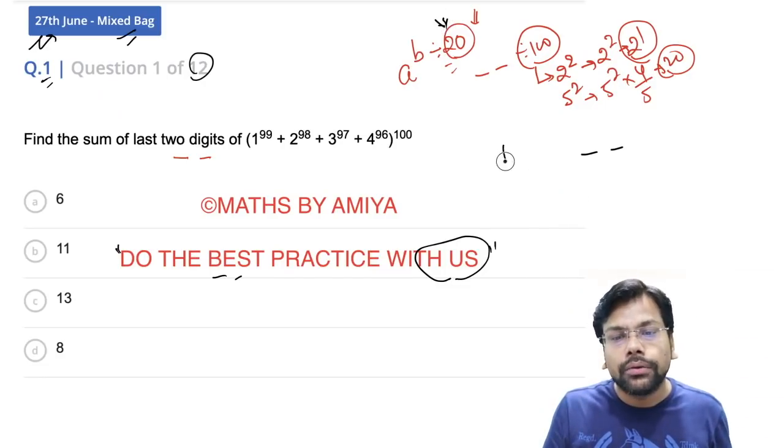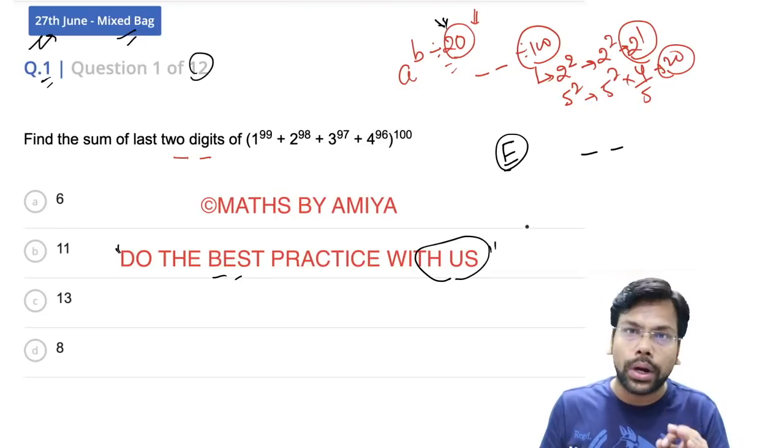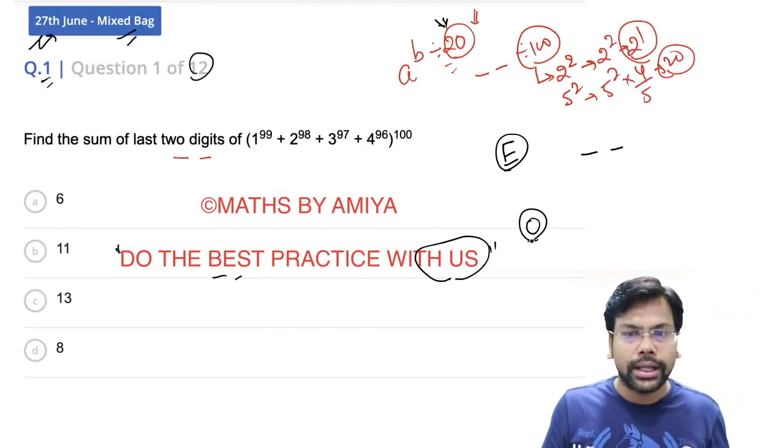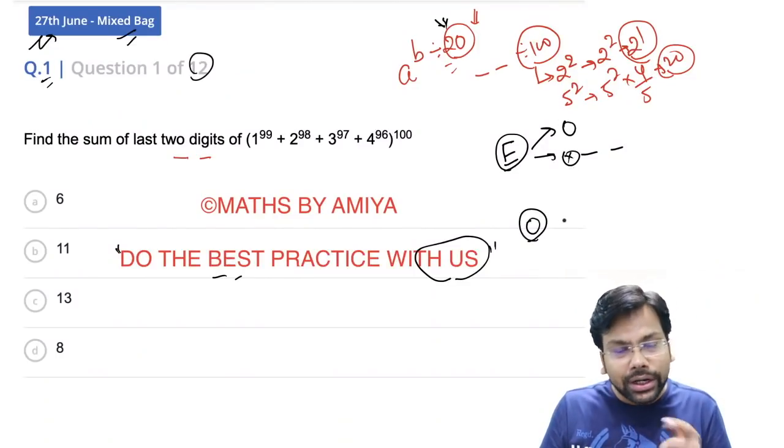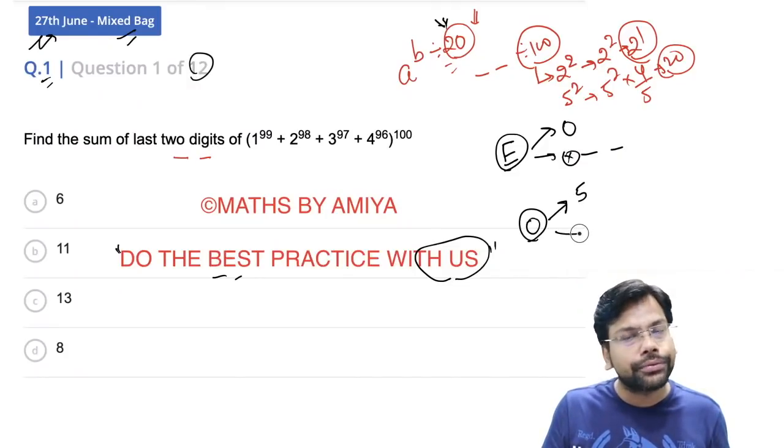Last two digits of any number would be repeated after 20. Now we have two types of numbers: even and odd. Within even, we have two types: ending with 0 and not ending with 0. In odd numbers, we have ending with 5 and not ending with 5.